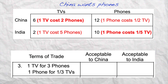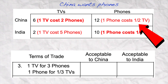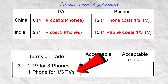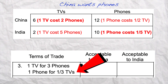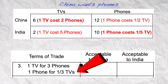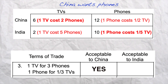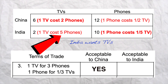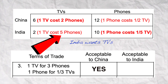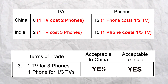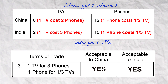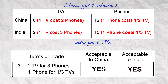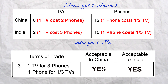Here we go for number three. China wants phones; if they produce it themselves it's gonna cost one-half a TV. If they trade, each phone's gonna cost one-third a TV — that's a lower opportunity cost, so China will benefit from that terms of trade. On the other side, India wants TVs; if they produce it themselves it costs five phones, but they can trade three phones and get a TV. This is a good deal for India. So in this case both India and China can get the goods they want at a lower opportunity cost — this is a mutually beneficial terms of trade.